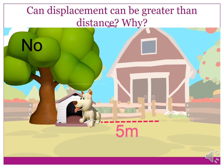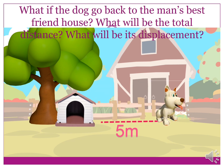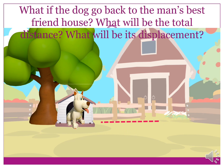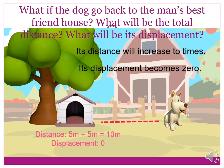Remember, displacement is the shortest length between the object's point of origin and point of destination. Another question: what if the dog goes back to the man's house? What will be the total distance, and what will be its displacement? Its distance will increase two times or be doubled, while its displacement becomes zero. Why? Because the starting position of the dog and its final position are the same. Thus, we cannot measure a distance between them. And that is the difference between distance and displacement.